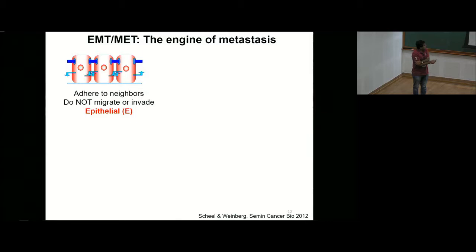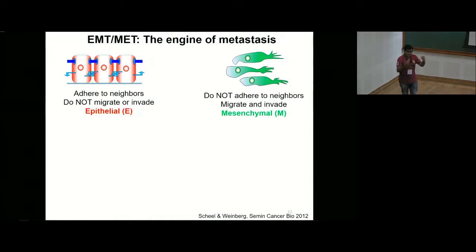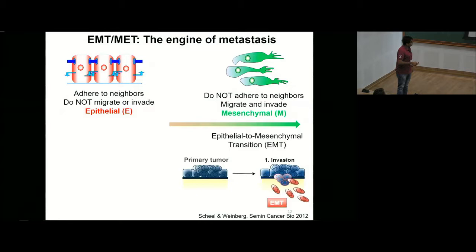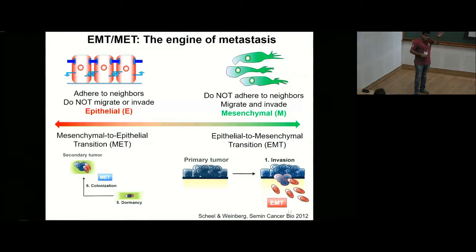The idea in the field has been the following: there are epithelial cells in our body which adhere tightly to their neighbors and do not typically migrate or invade. And there are mesenchymal cells — such as red blood cells — which do not adhere to their neighbors and have the ability to migrate and invade. How metastasis happens, according to one main hypothesis, is that cells undergo a transition in which they gain properties of migrating and invading and lose the property of adhesion — this is called epithelial-to-mesenchymal transition, or EMT. That is when they breach the basement membrane and get on the freeway. When they reach a distant organ they undergo the reverse, mesenchymal-to-epithelial transition (MET), because now they need to settle down. This EMT and MET continues to drive metastasis.